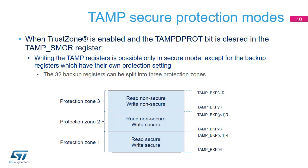Protection Zone 1 starts at backup register 0 and ends at backup register X minus 1, with access permissions of secure reads and writes. Protection Zone 2 starts at backup register X and ends at backup register Y minus 1, with non-secure reads and secure writes. Protection Zone 3 starts at backup register Y and ends at backup register 31, with non-secure reads and writes. X and Y are set in the BK-PR-WD-Prot and BK-PWD-Prot fields of the TAMP-SMCR register.